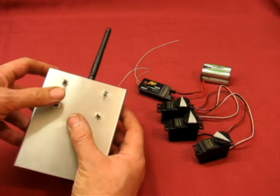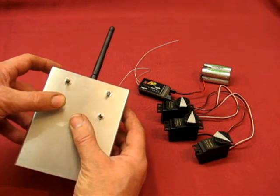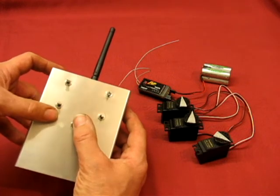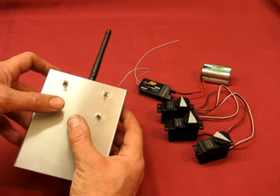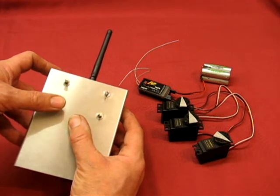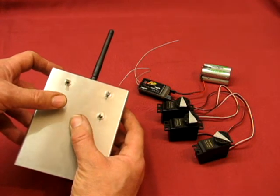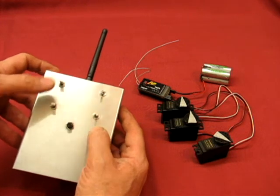Same for elevator. Hold the button, up trim, that's ten steps in the up direction. Full down trim. There you go, that's back to neutral again.